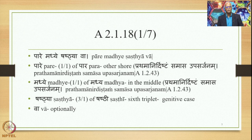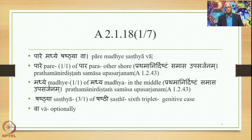Let us proceed further and now study 2.1.18, which is Pare Madhye Shashtya Va. There are four padas in the sutra: Pare, Madhye, Shashtya, and Va. Pare is the nominative singular of Para, meaning 'other shore.' Madhye is the nominative singular of Madhya, meaning 'in the middle.' Because both these words are in prathama ekavachana, the sutra Prathama Nirdishtam Samasa Upasarjanam applies and terms them as upasarjana. As a result, these two words will occupy the initial position of the Avyayibhava Samasa.